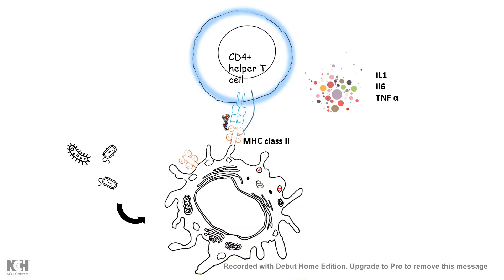What superantigens do is bind laterally to both the MHC molecule and the T cell receptor, bridging their interaction. These superantigens are not engulfed by macrophages, not processed inside them, and never presented in the peptide-binding groove — as if they are not even experienced by the macrophages. As a result, they non-specifically activate all the T cells.